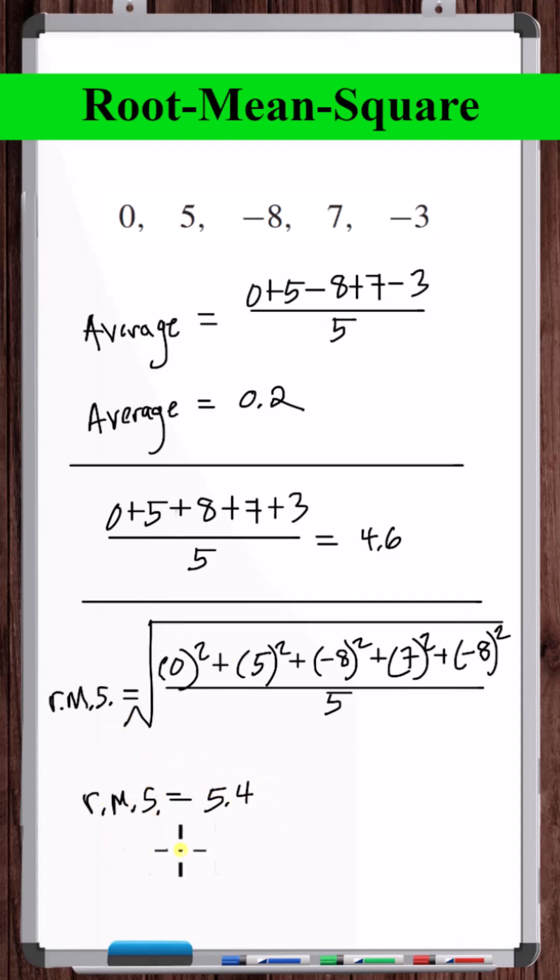This is what statisticians use to get a sense of how large a group of numbers is, in terms of magnitude. You could potentially use the average with signs removed, but the root mean square has become commonplace for this purpose.